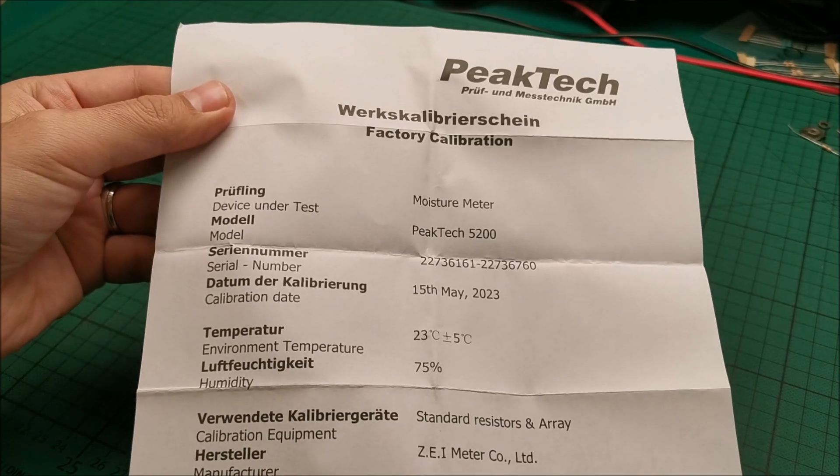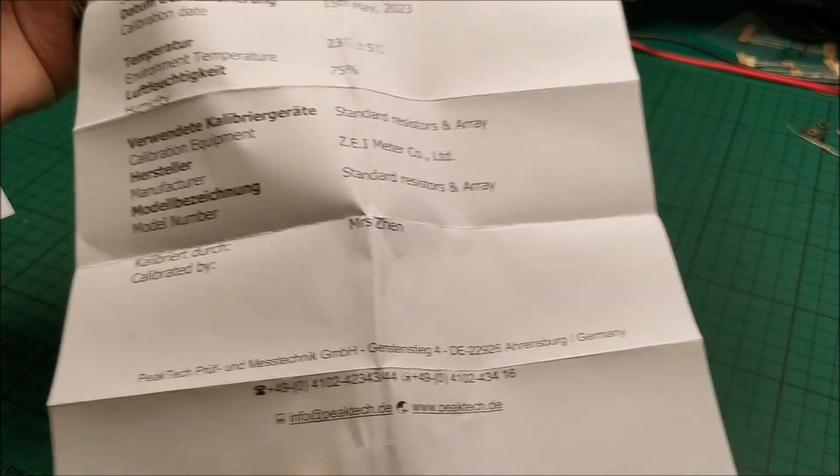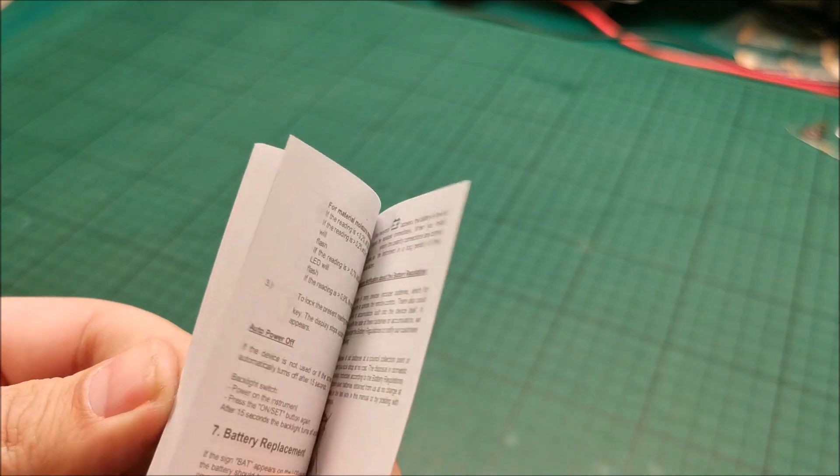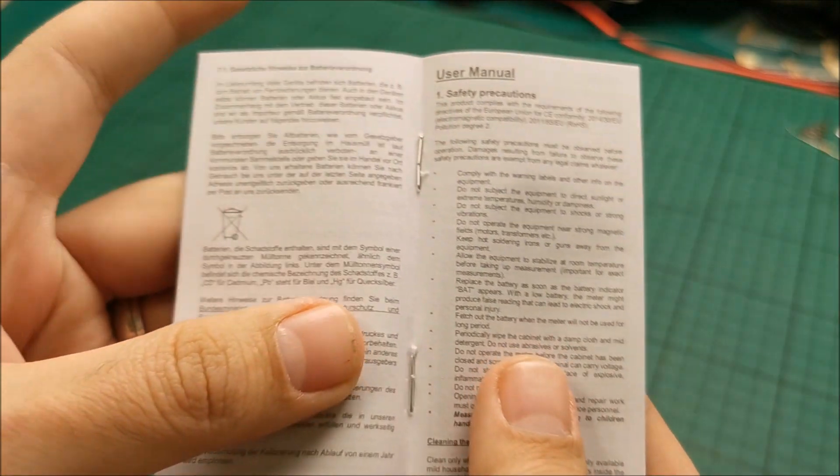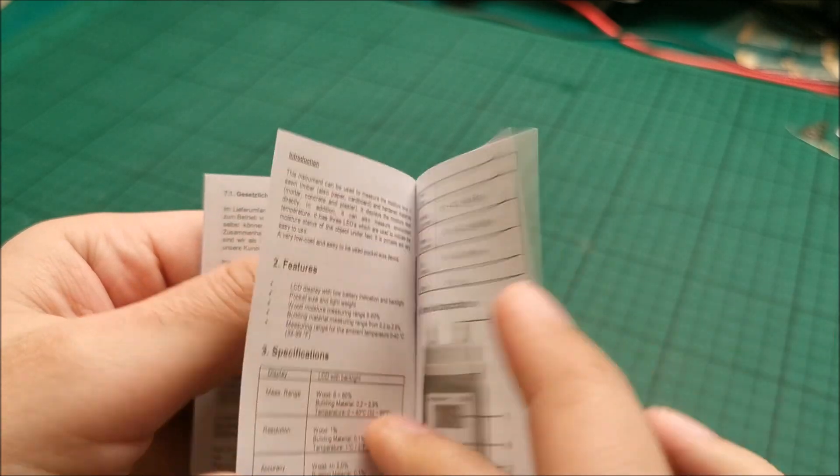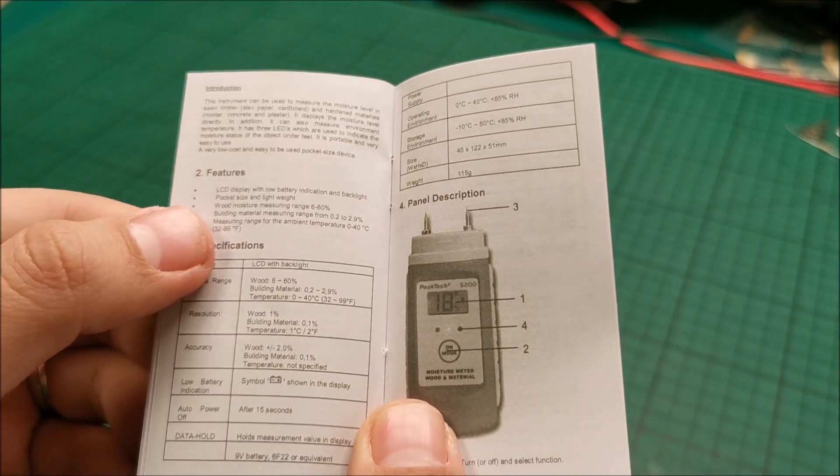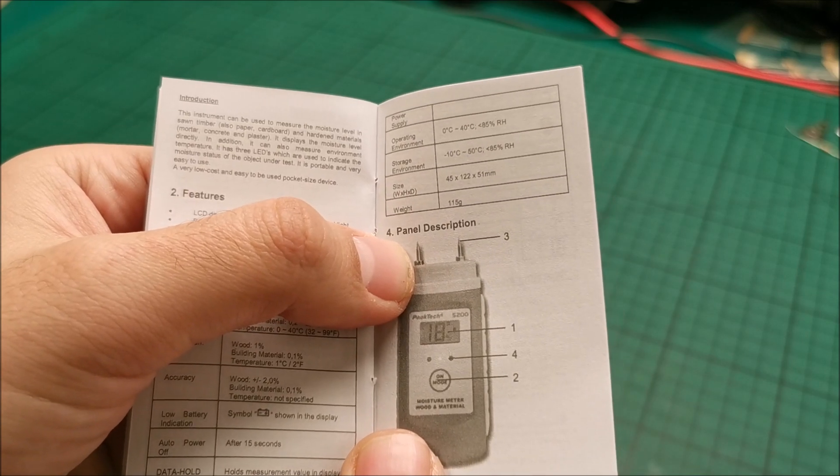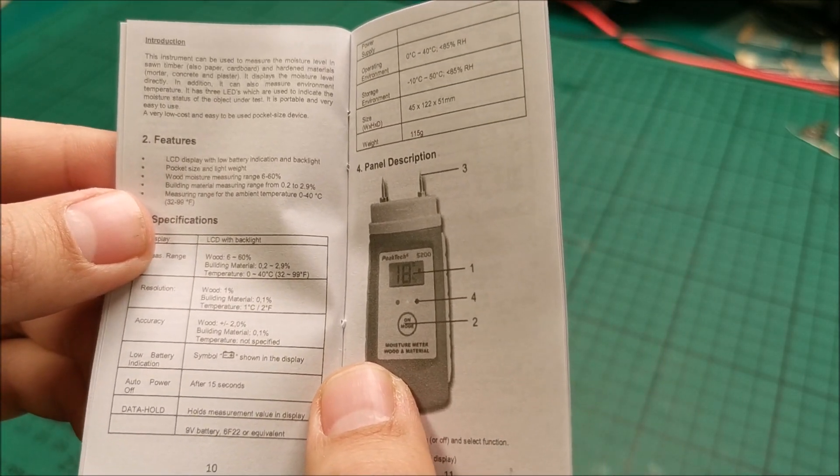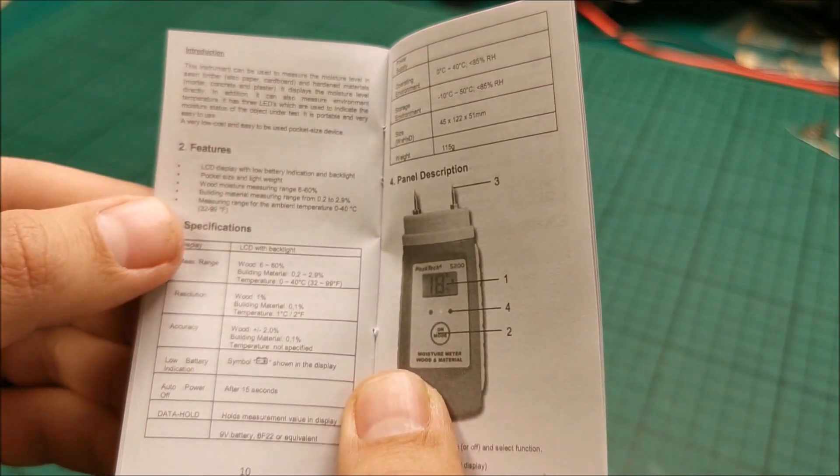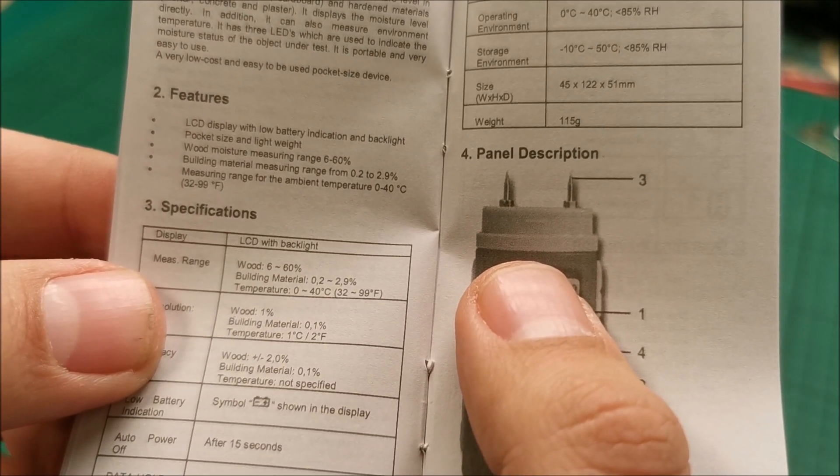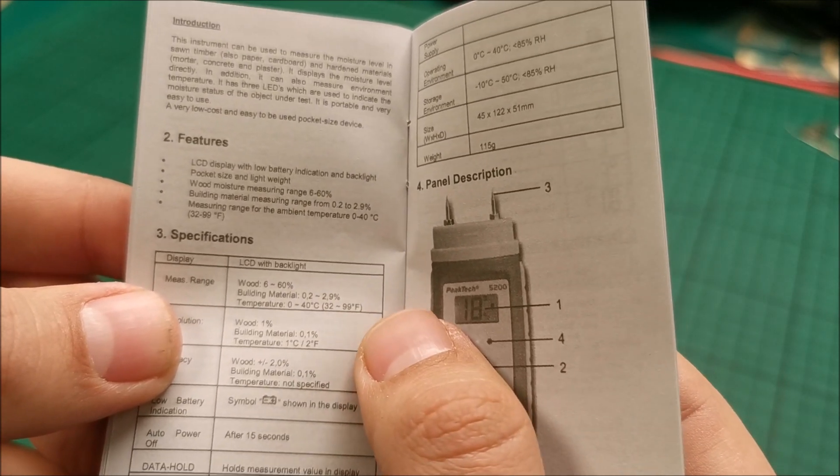Before going out, this is the calibration sheet. See if I'm actually using the tool properly. English, as expected in a PICTEC manual from the middle of it. Safety precautions, we don't do that, joking. I will read that, but I think it's on the lines of don't poke yourself with those and don't eat the battery. That's what needs to be put in safety manuals these days. So, measuring range for wood from 6 to 60%. Building material from 0.2 to 2.9. Temperature 0 to 40 Celsius, 30 to 99 Fahrenheit.